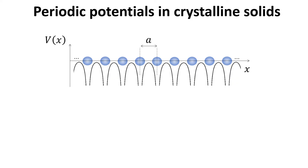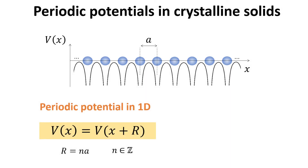Notice that the full potential inherits the lattice periodicity. Mathematically, the periodicity of the potential is captured by the following equation, which says that the potential landscape is the same if viewed from the perspective of any unit cell. Distinct unit cells are connected through the lattice vector R, which is simply an integer n times the lattice constant A in our one-dimensional lattice model.